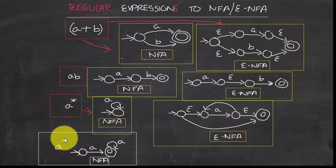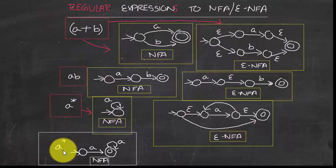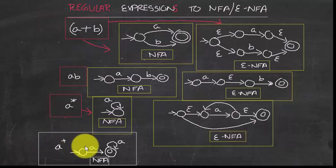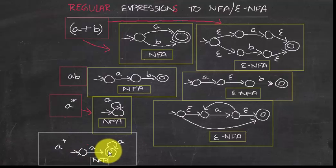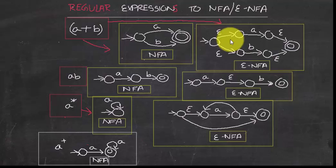With A+, the automaton starts at the initial state, and once it reads an A it can be accepted, or it can accept multiple A's and still be accepted. Now let's move on to the epsilon-NFA rules.